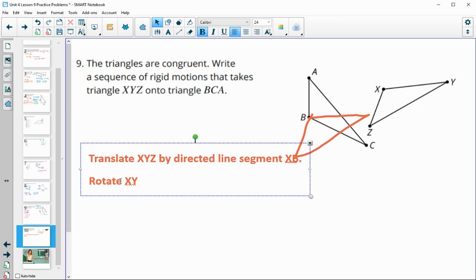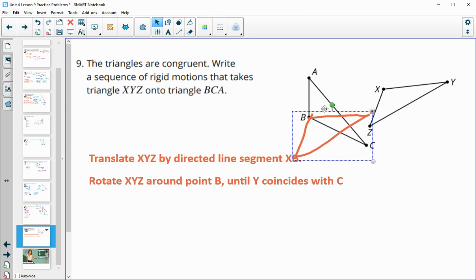Then we're going to rotate triangle XYZ around point B since that's the one we got connected. And then I'm just going to take this next point here, Y, until Y lands on or coincides with C. So Y goes to C. And if I do that here, remember that this B stayed the same and then Y was right here, so now we lined this up.